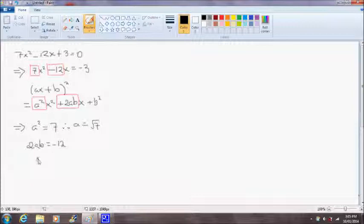So that means that 2ab is equal to negative 12. And we know that a is equal to square root of 7. So square root of 7b is equal to negative 6. And therefore b is equal to negative 6 divided by the square root of 7.